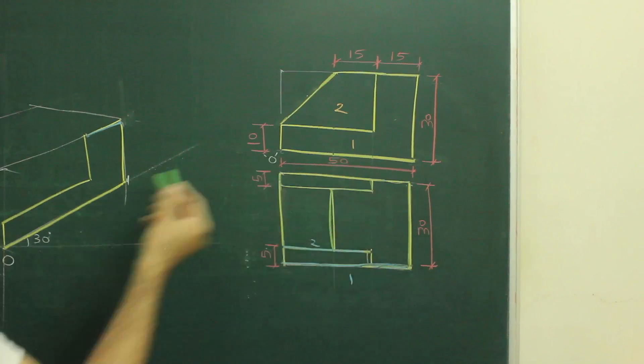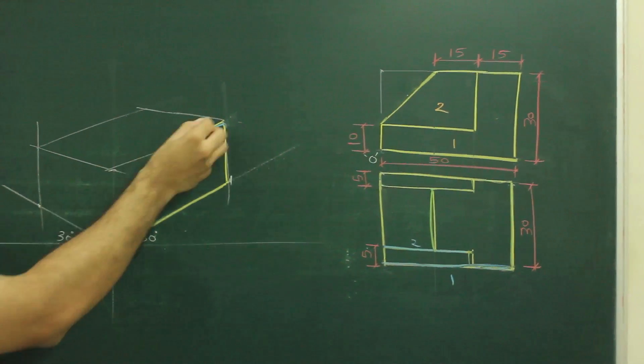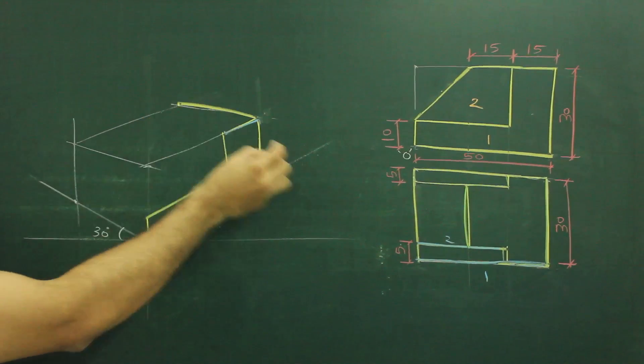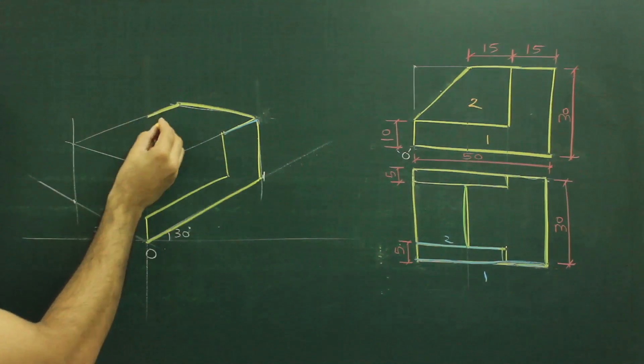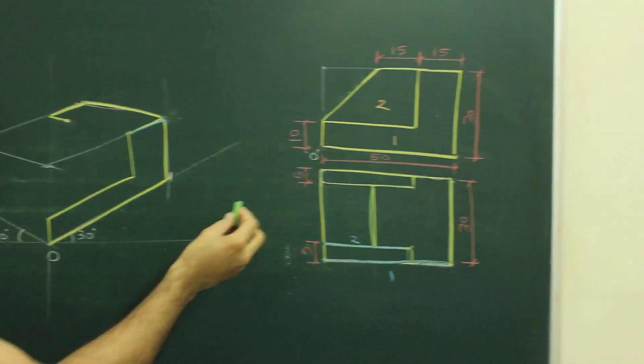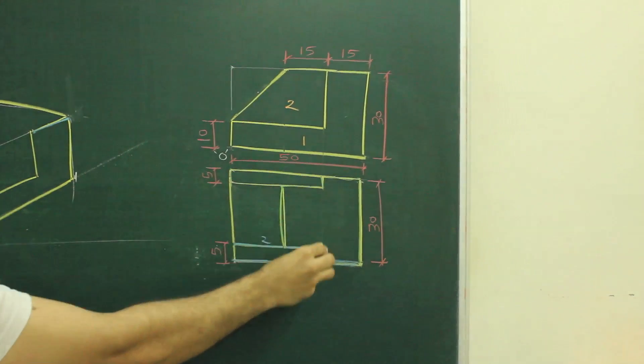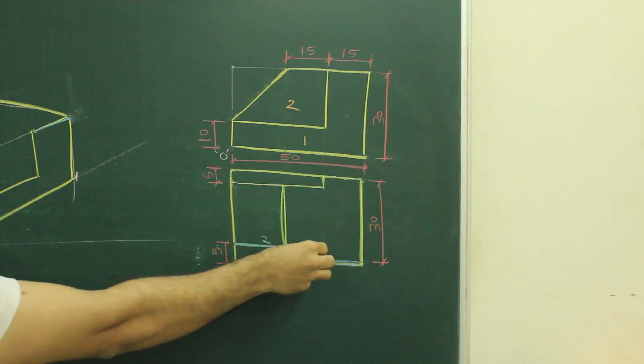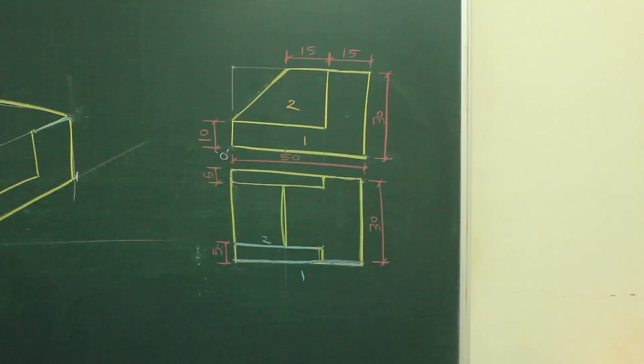So how much I have to go behind? 30. So I can go behind by 30. Then they are given 50. Then again it is coming inside by 500. If you see this, see the main diagram. In top view, this distance is 5. This is 5. And then they have given 15, 15.